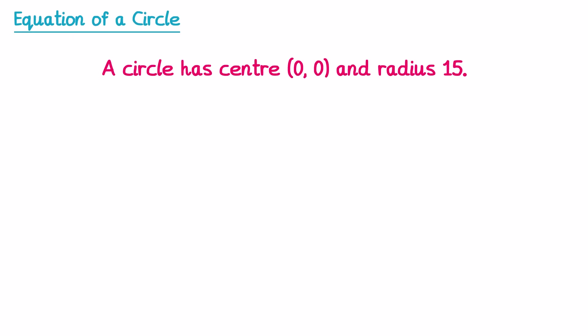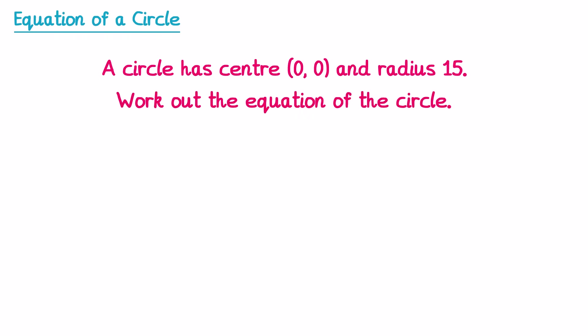Now let's look at two final questions. In this one, we have a circle with centre (0, 0) and radius 15, and we're asked to write down the equation of the circle. Since the centre is at the origin, it's in the form x² + y² = r². The radius is 15, so it's x² + y² = 15² = 225.